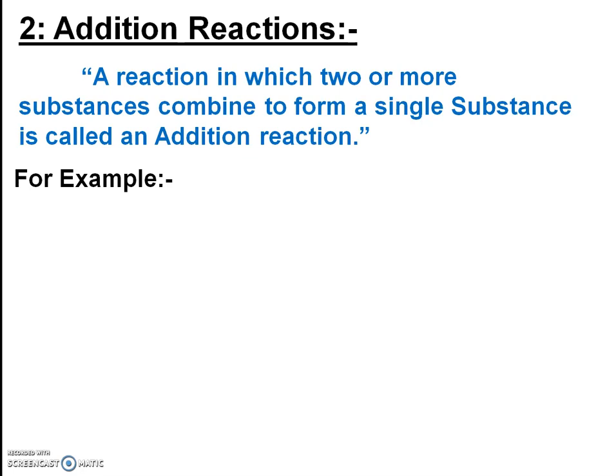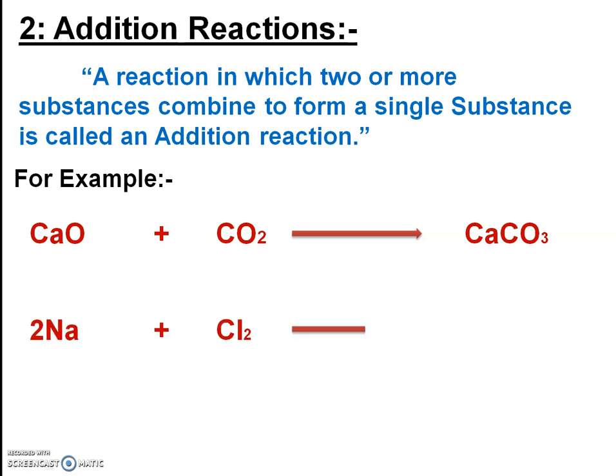In an addition reaction, two or more elements combine to form a new substance — the opposite of decomposition, where one substance breaks into two. For example, calcium oxide and carbon dioxide, if they combine again, they form calcium carbonate (CaCO3). So that reaction is called an addition reaction. Similarly, sodium and chlorine combine to form sodium chloride (NaCl).